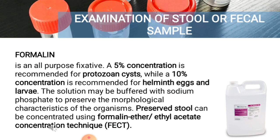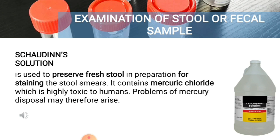The two most commonly used preservatives are 10% aqueous formalin and PVA (polyvinyl alcohol). Formalin is an all-purpose fixative: a 5% concentration is recommended for protozoan cysts, while 10% concentration is recommended for helminth eggs and larvae. This solution may be buffered with sodium phosphate to preserve the morphological characteristics of organisms. Preserved stool can be concentrated using the formalin ether or ethyl acetate concentration technique, otherwise known as FECT. The next preservative is Schaudinn's solution, used to preserve fresh stool in preparation for staining stool smears. It contains mercury chloride, which is highly toxic to humans, and problems of mercury disposal may arise.